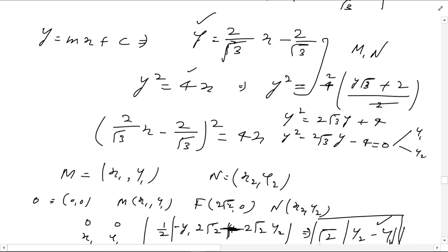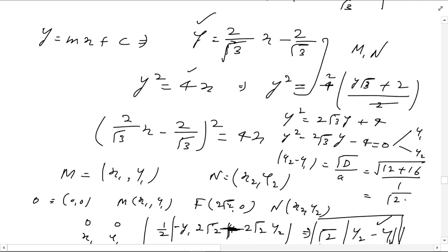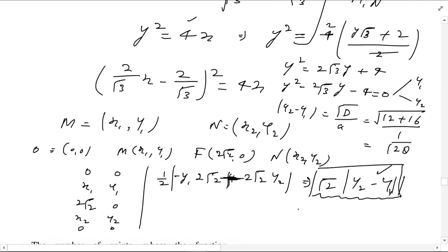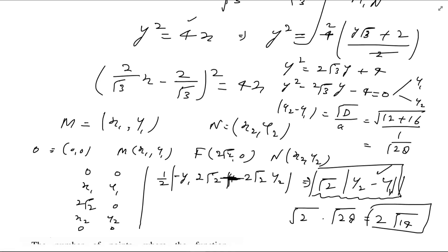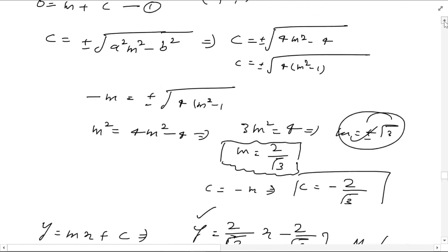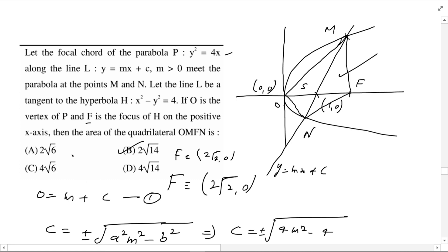The roots are y1 and y2. The difference of roots is given by √(discriminant)/a = √(b² - 4ac) = √(12 + 16) = √28 = 2√7. So the quadrilateral area = √2 × 2√7 = 2√14. Therefore, the quadrilateral area OMFN is 2√14, and option B is the correct choice.